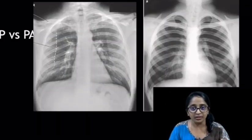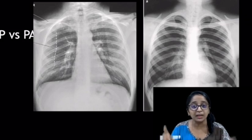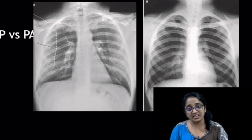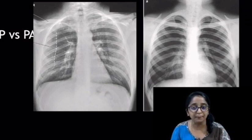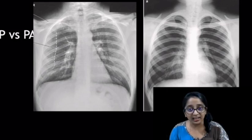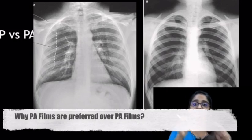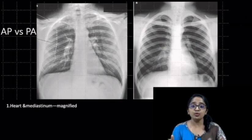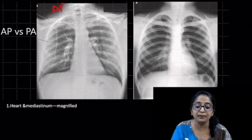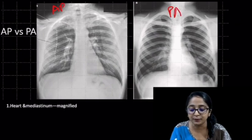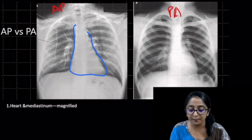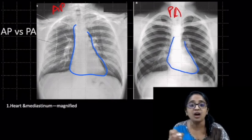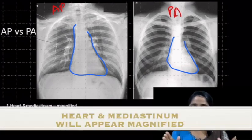One may naturally wonder what possible difference AP and PA films look like. In the coming slides, I'll be talking about the major differences between AP and PA films and why PA film is preferred over AP radiographs. Given before you are two sets of films — one on the right is the AP view and one on the left is the PA view. If you observe carefully, you can see the heart in AP view appears enlarged as compared to the heart in the PA view. That is, the heart and mediastinum will appear magnified in an AP radiograph.